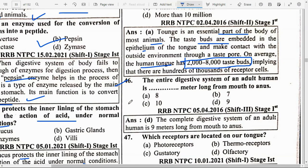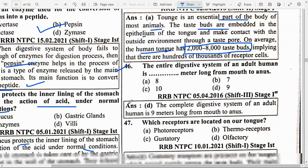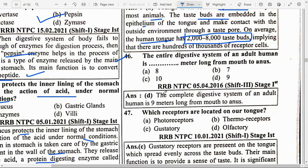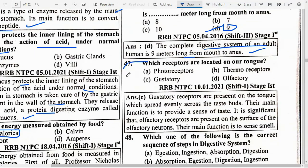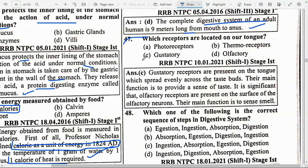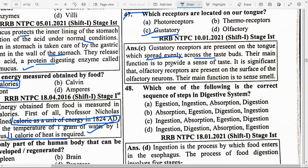The entire digestive system of an adult human is option D — 9 meters long from mouth to anus. Which receptors are located on our tongue? Option C — Gustatory receptors. Gustatory receptors are present on the tongue, spread evenly across the taste buds. Their main function is to provide a sense of taste. Olfactory receptors are present on the surface of olfactory neurons and their main function is to sense smell.